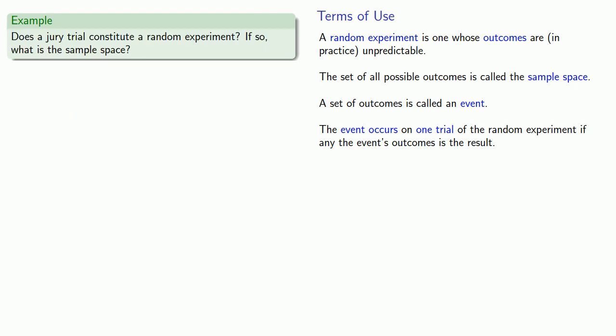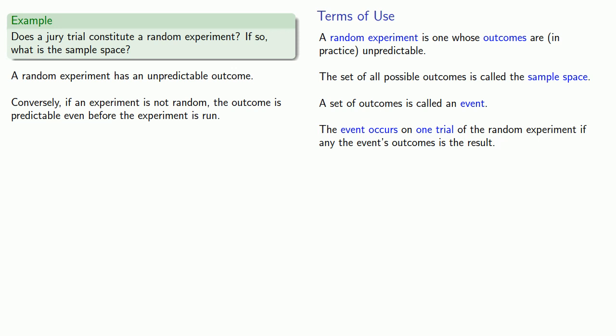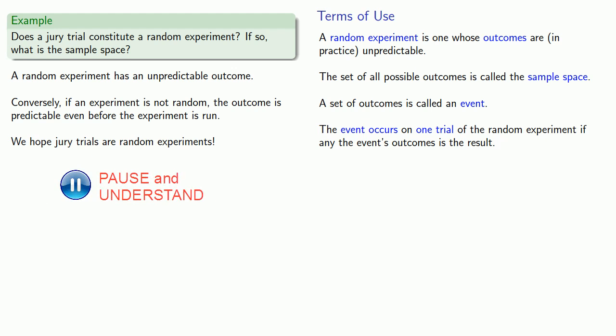How about a jury trial? Does a jury trial constitute a random experiment? And if it does, what's the sample space? A random experiment is one whose outcomes are, in practice, unpredictable — its outcome is not predictable even before the experiment is run. If we knew what a jury would decide before the jury decided it, then there's not really any reason to have a jury trial. So we really hope jury trials are actually random experiments. If they're not, there's a serious problem, which again speaks to the importance of an understanding of probability and statistics for citizens of a free society.